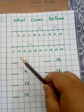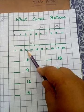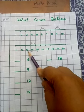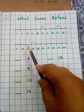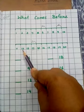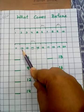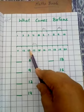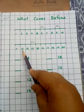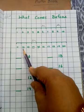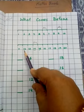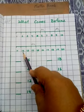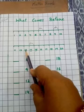When we ask what comes before 13, again we count in backward direction and the next number of 13 is 12. Backward direction में count करने पर 13 के just पहले कौन सा number आता है? 12. तो 12 comes before 13.